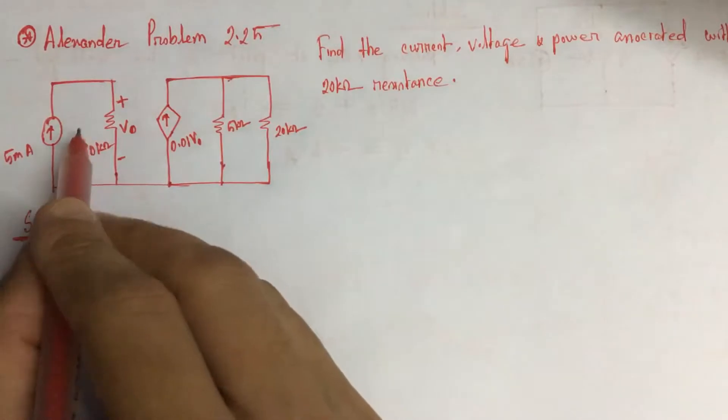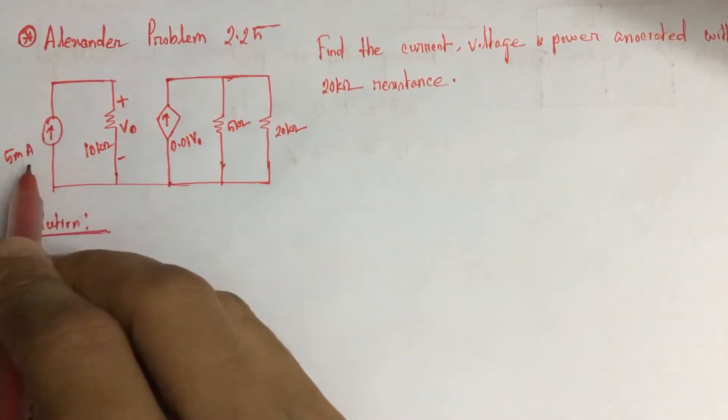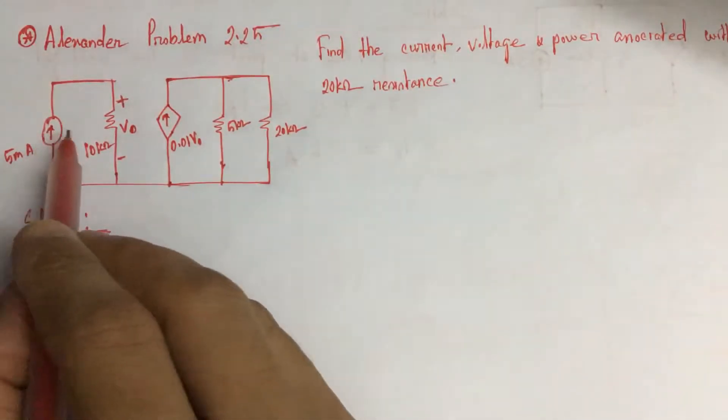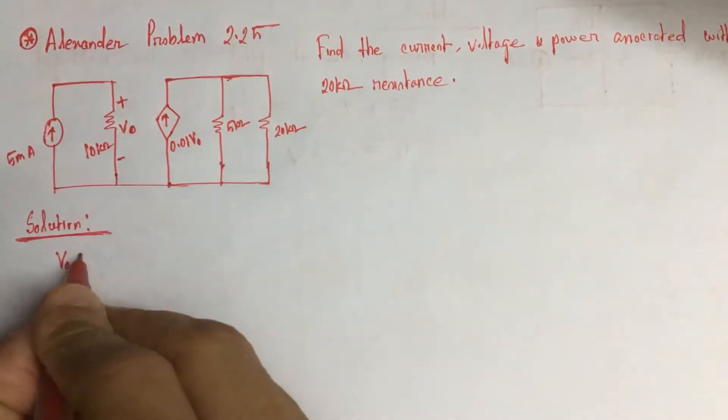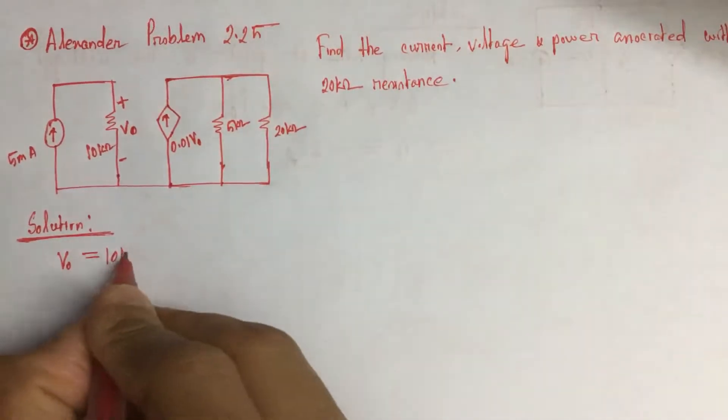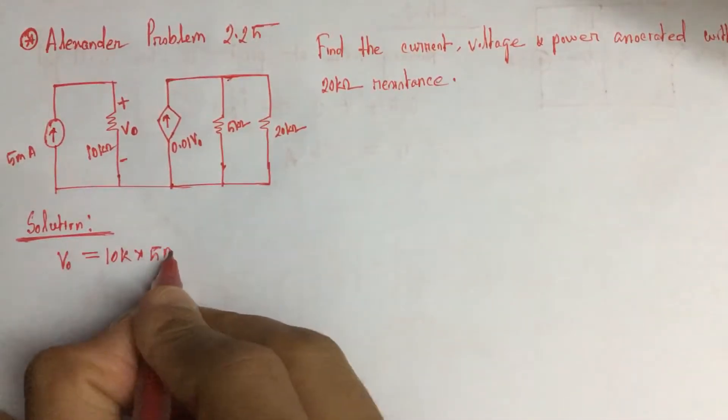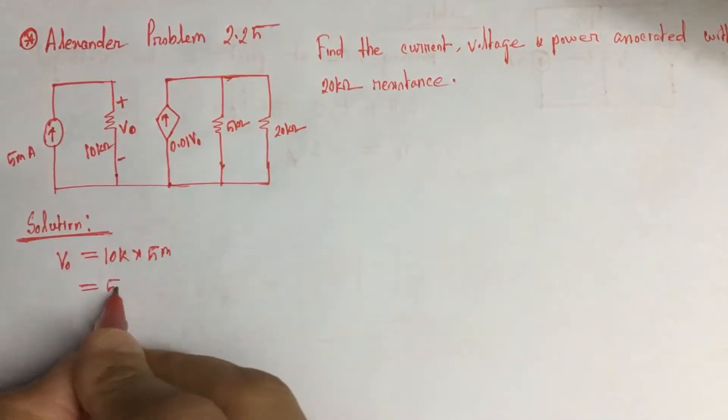From the first part of the circuit, we see that the 5 mA current source is flowing through the 10 kohm resistance. So the voltage V0 will be resistance multiplied by current, that is 50 volts.